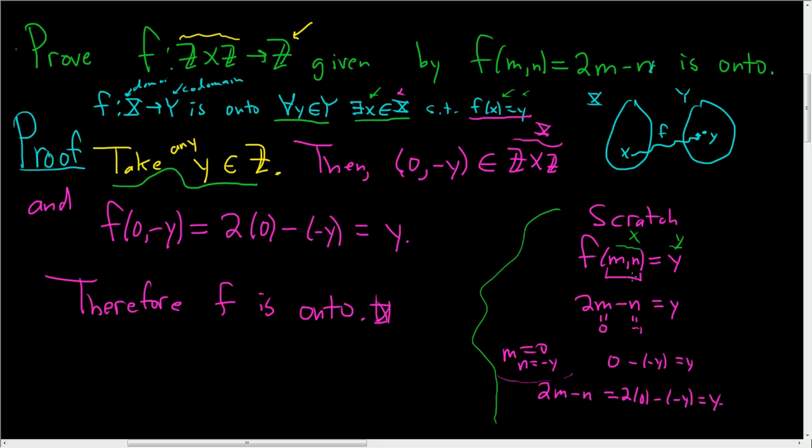You just write it down, work backwards, and solve for x. When we got here, 2m minus n equals y, I decided I didn't want the 2m, so I'm just going to make M equals 0. That would leave me with negative n equals y. Well, that means n is equal to negative y. So let's take n equals negative y and M equals 0, and we're good.